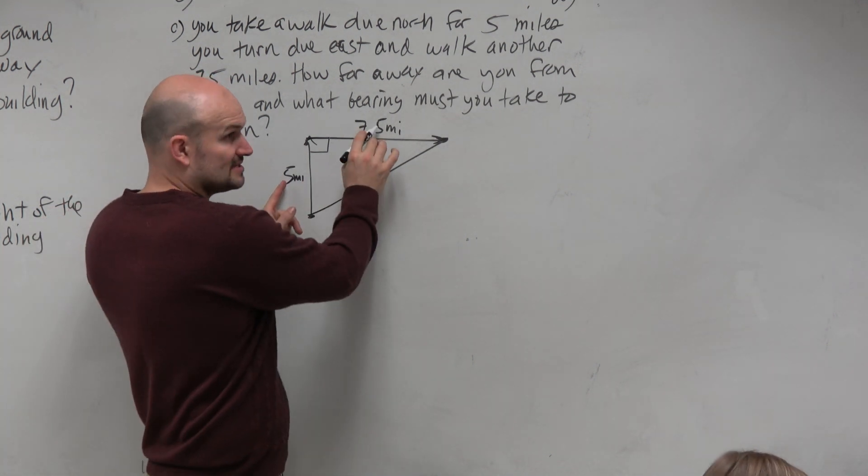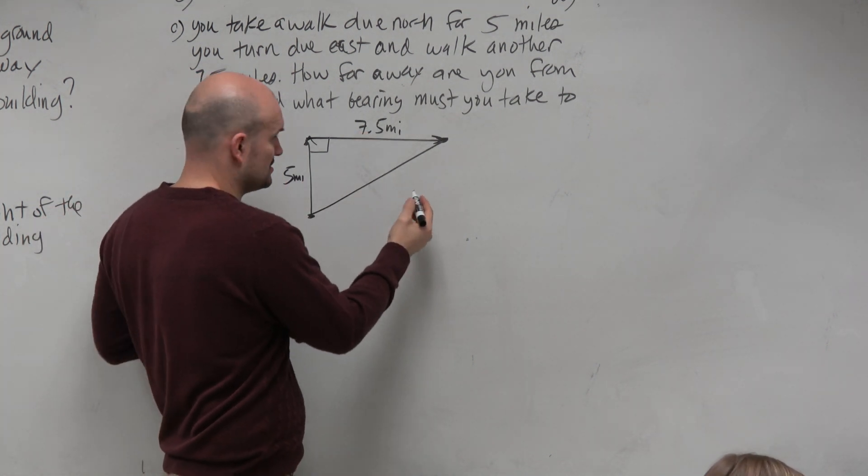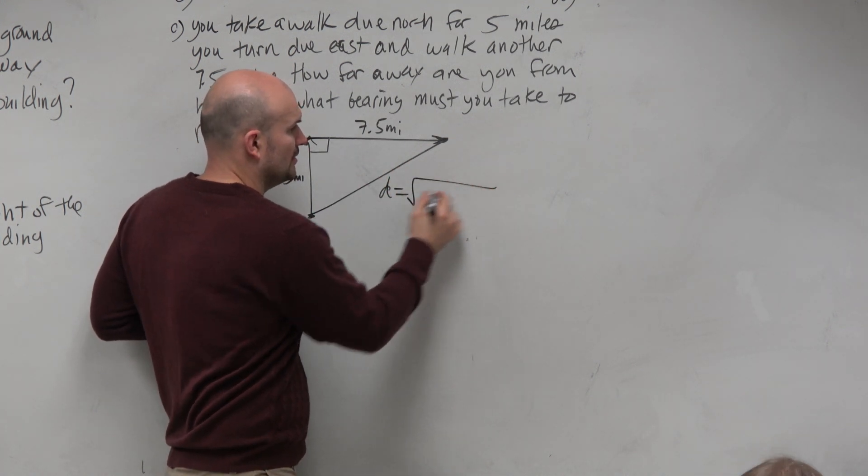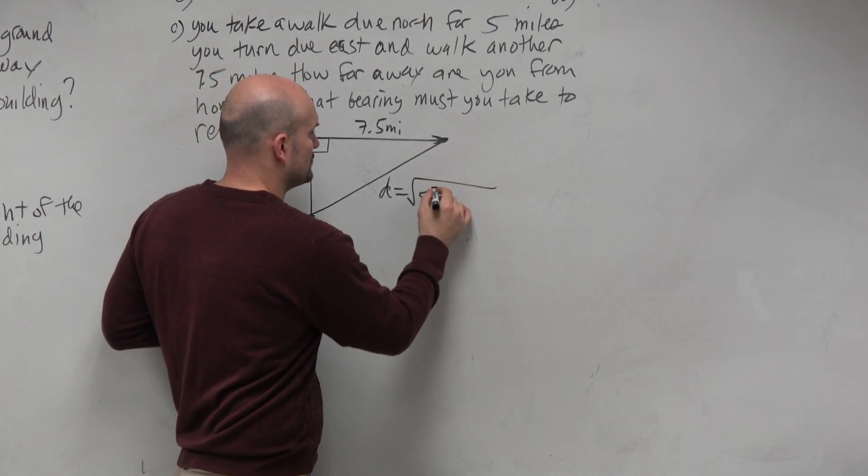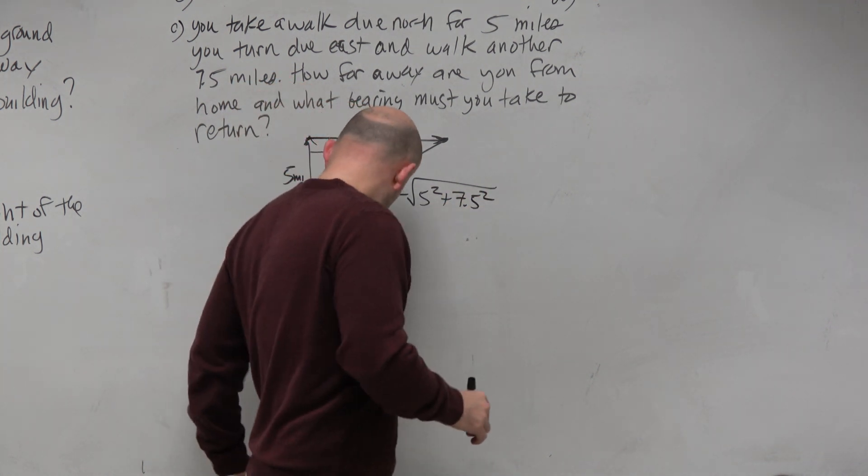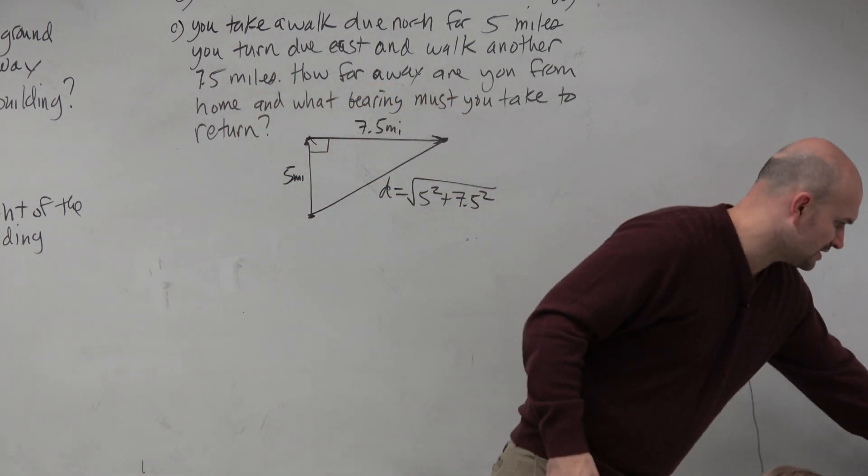Pythagorean theorem, right? This square plus that square equals, what do you want to call this? I'll call it D or R or whatever else you can do it. But we could say that's going to be the square root of 5 squared plus 7.5 squared, right? And therefore, using our calculator.